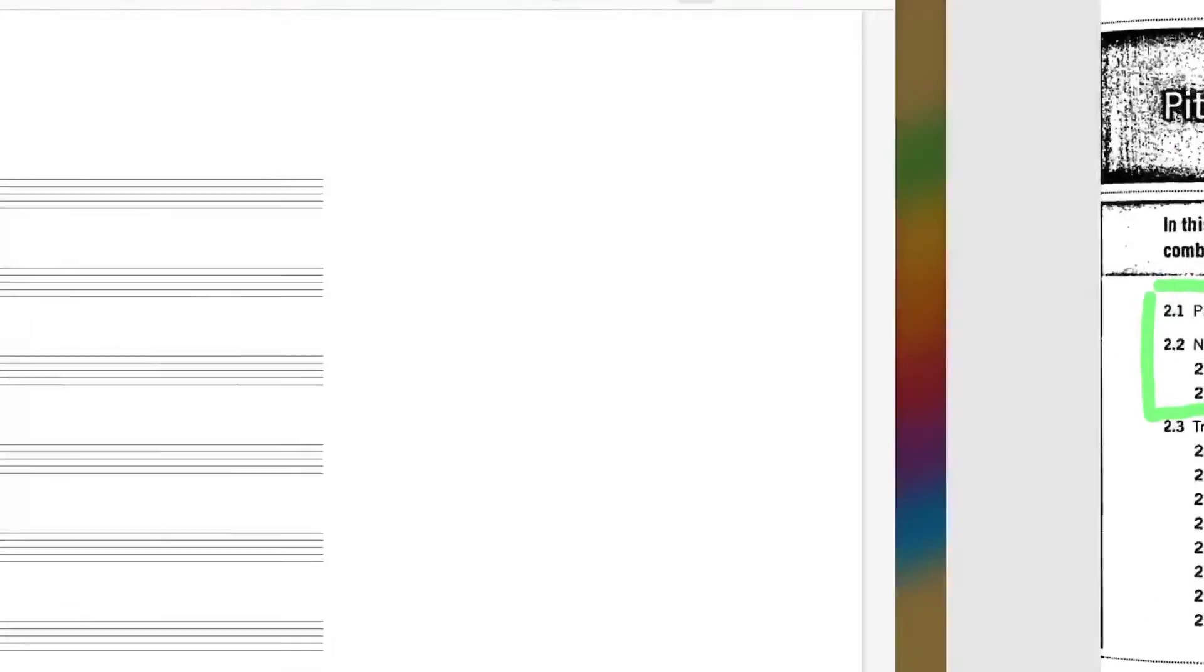To make an analogy to tonal music theory, a pitch class set is kind of like saying that something is A major. If the chord is A major, it might look like this, it might look like this, it might look any number of ways. There might be like four A's in a row and then a C sharp and an E.